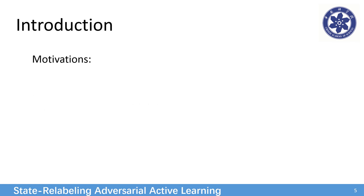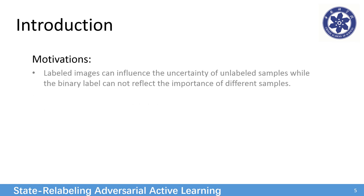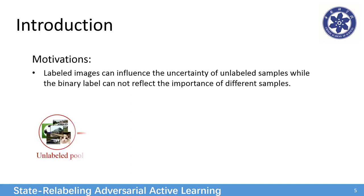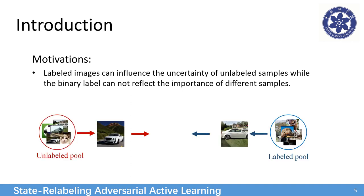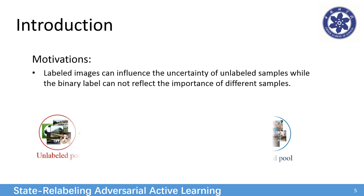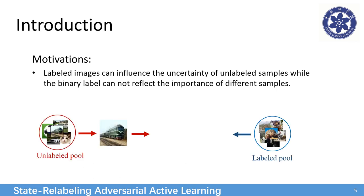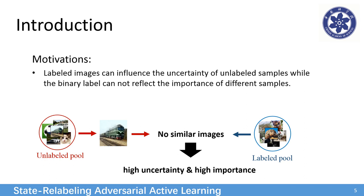Our motivations are based on these. Firstly, labeled images can influence the uncertainty, but the binary label cannot reflect this. For example, a similar labeled sample really gives the unlabeled sample's importance, and if there are no similar samples, its importance will be higher.